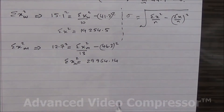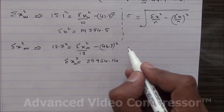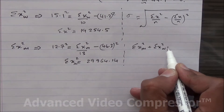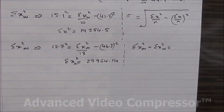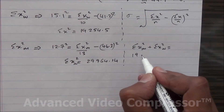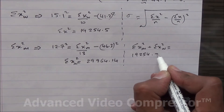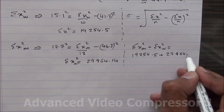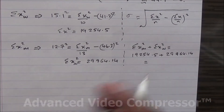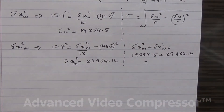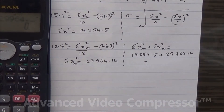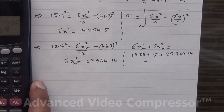Now that we know the summation of x squared for both groups, the summation of x squared for the men plus summation of x squared for the women gives the whole group total. Taking 19,254.5 plus 29,964.14, the total is 49,218.64.